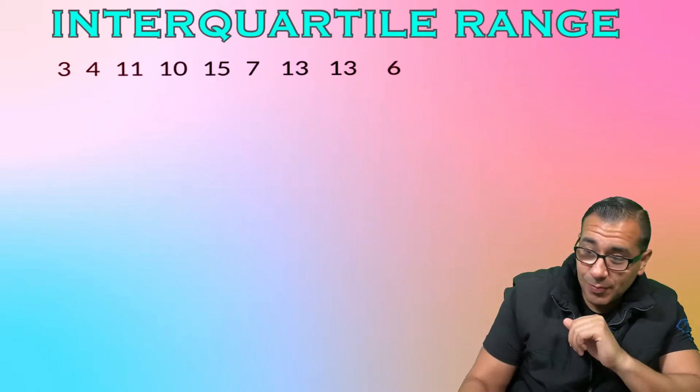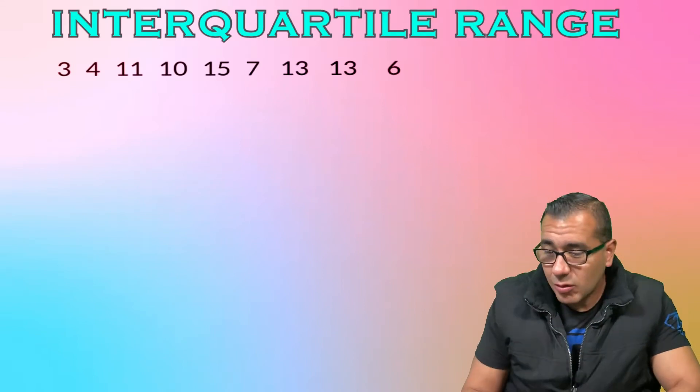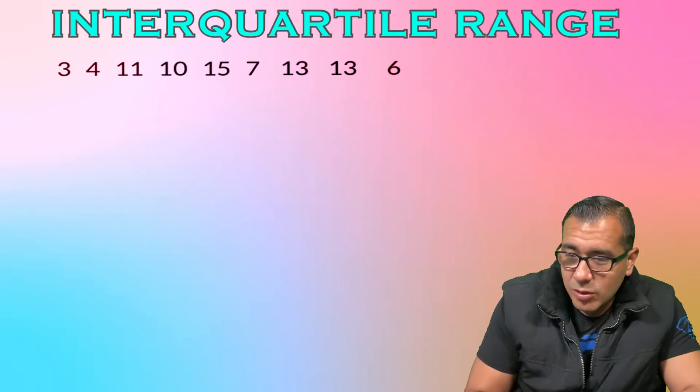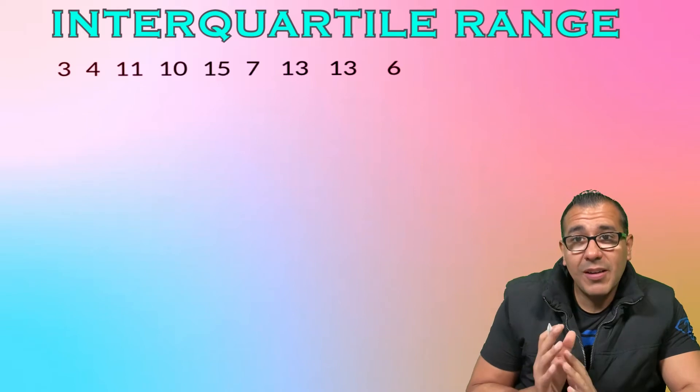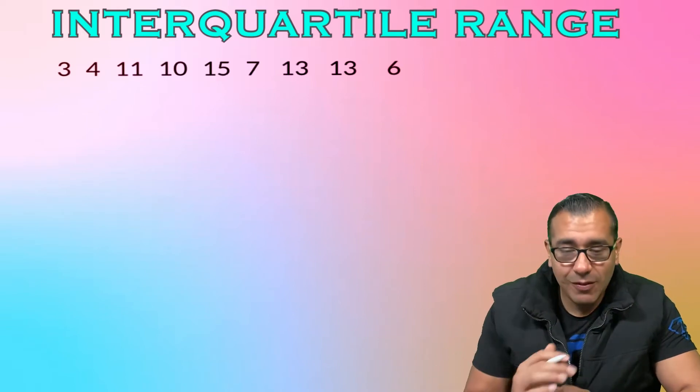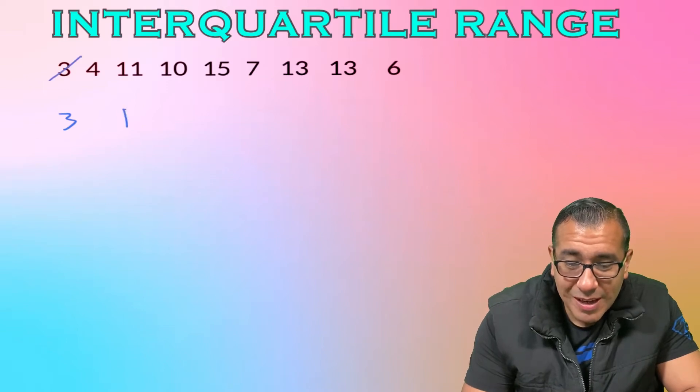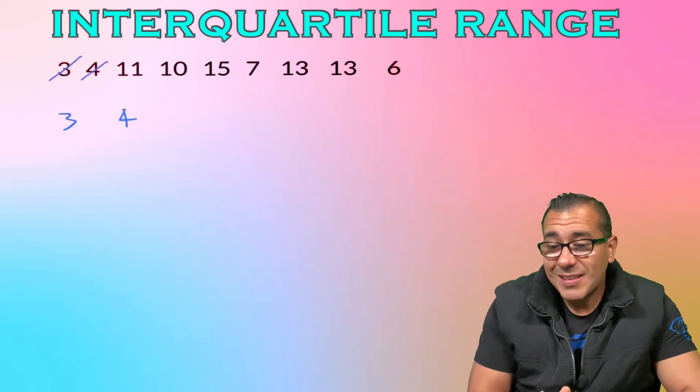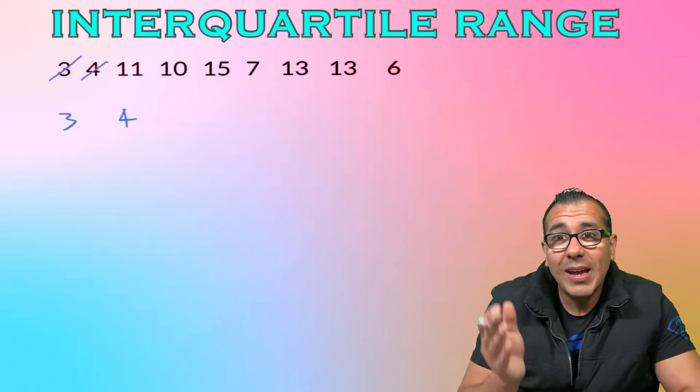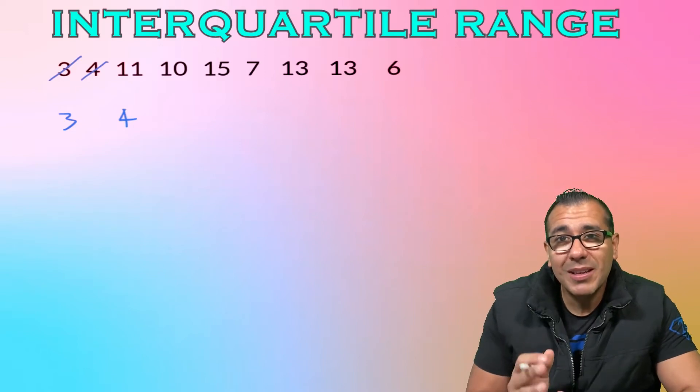So let's go ahead and put everything in order. One thing that's important is when you're listing these values in order, if you don't have technology, make sure as you're writing these down, cross them out as you go along.